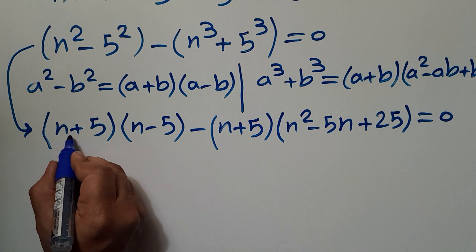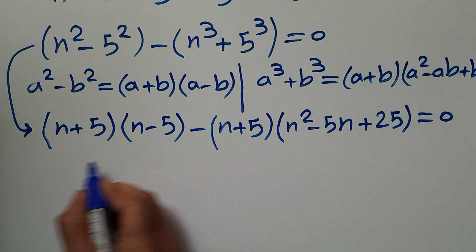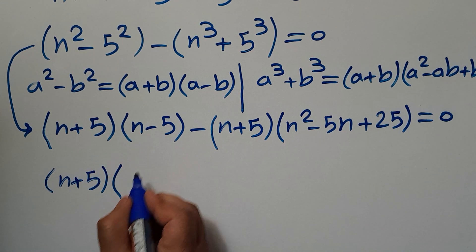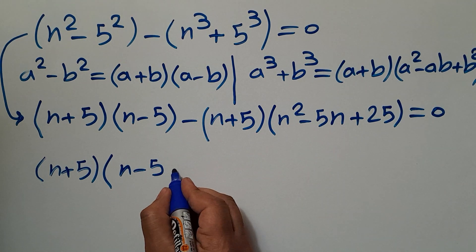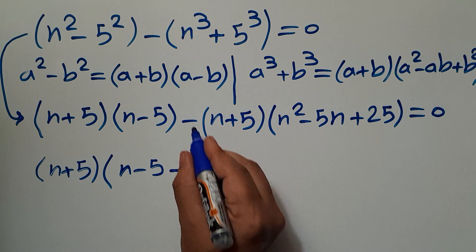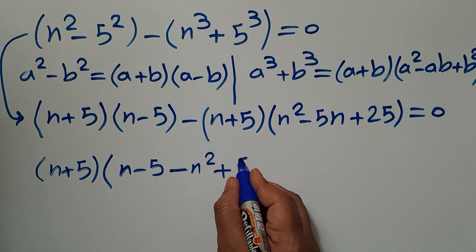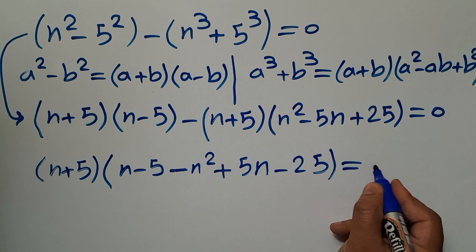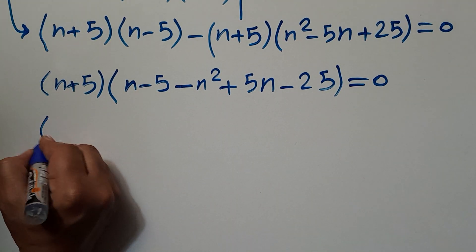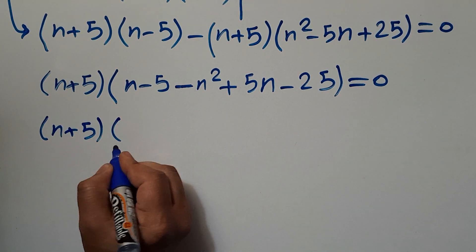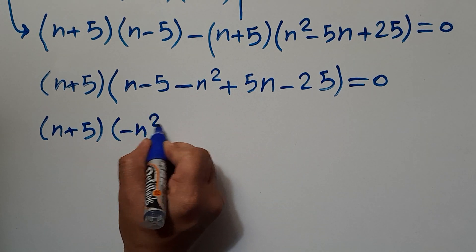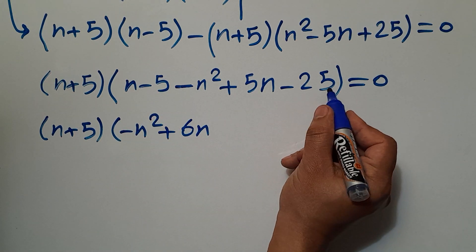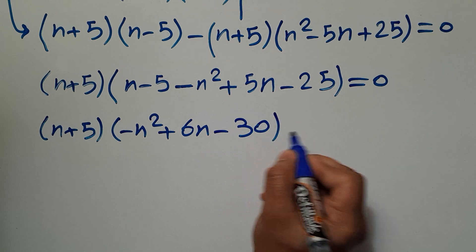Here n plus 5 is common between these two terms, so we can factor it out. Factoring gives n plus 5 times the expression n minus 5 minus n squared minus 5n plus 25. Simplifying the bracket: n minus 5 minus n squared minus 5n plus 25 becomes negative n squared plus 6n minus 30, so n plus 5 times negative n squared plus 6n minus 30 equals 0.